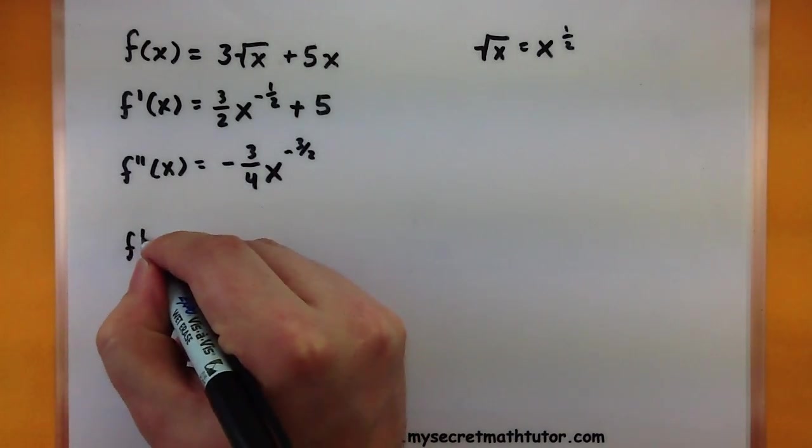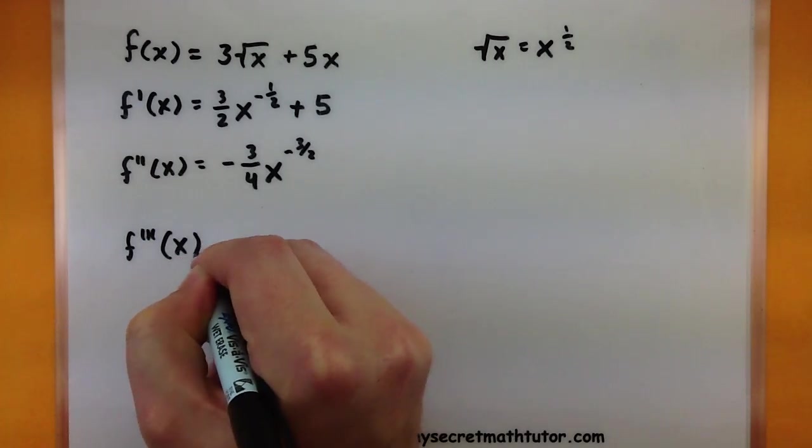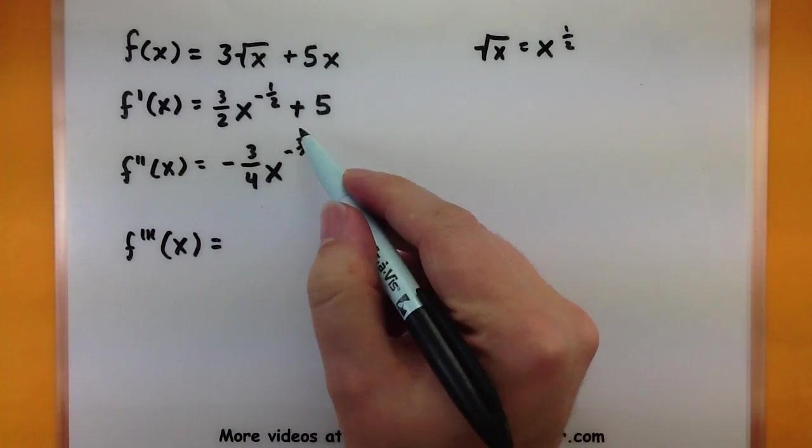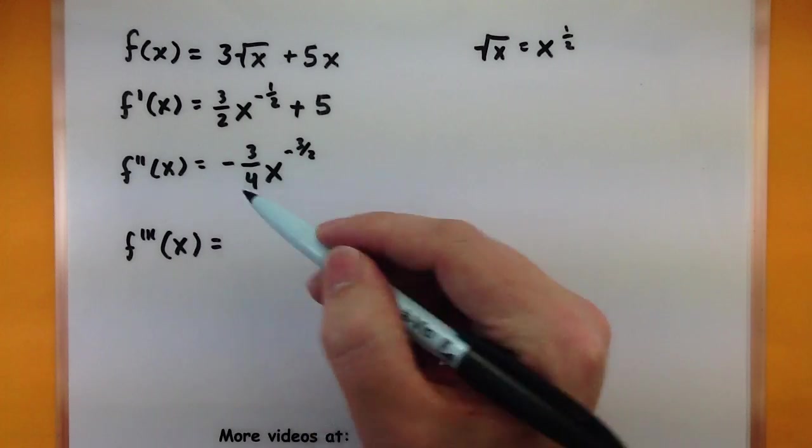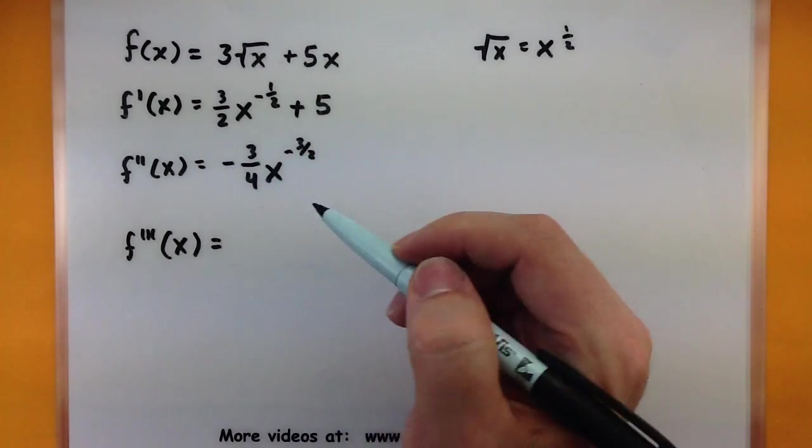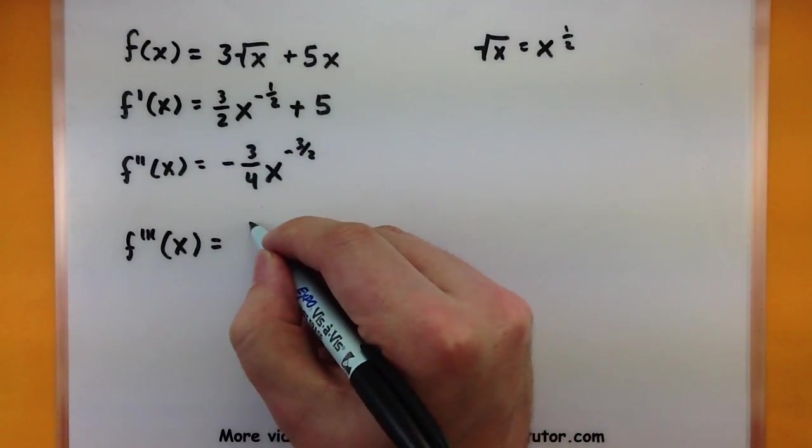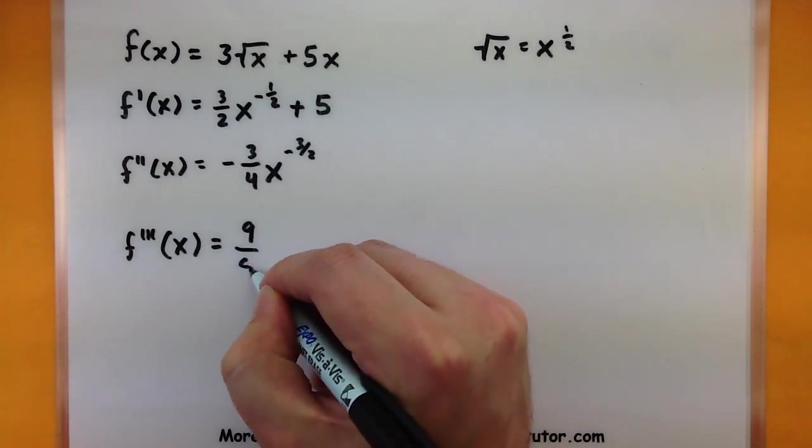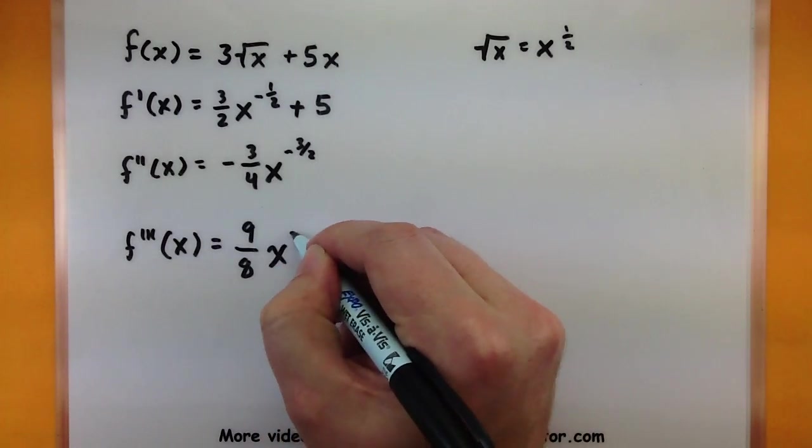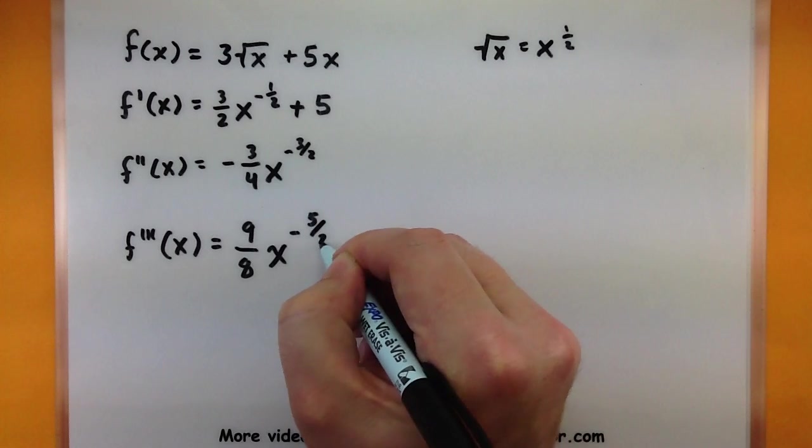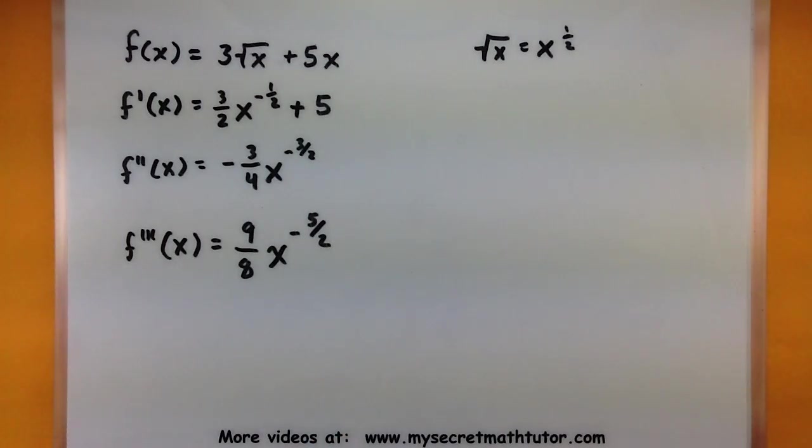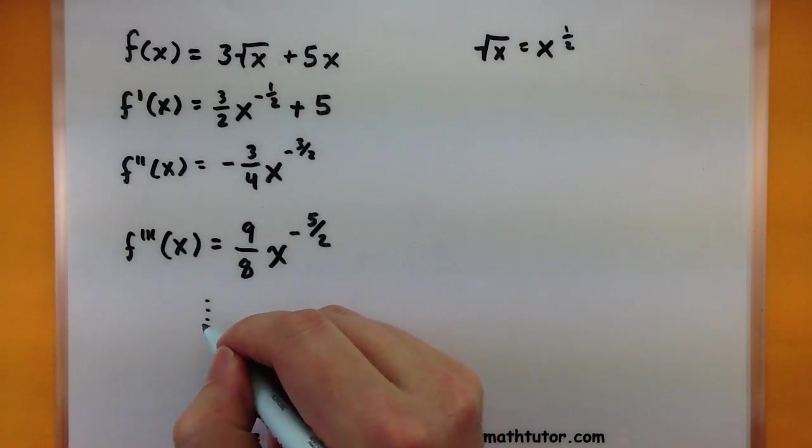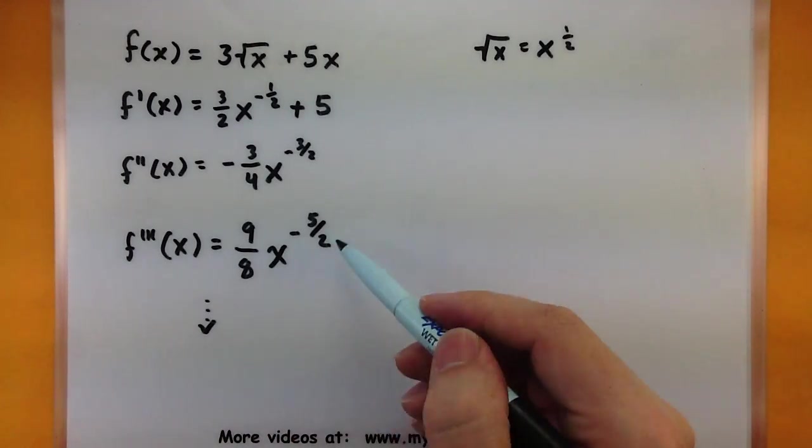Alright let's find one more of these things. Third derivative. So now think of taking this power, bringing it down, multiplying it out front. Negative times a negative would give us a positive. So positive 9 eighths x to the negative 5 halves. And we really could continue on from there. Just continuing bringing down the power.